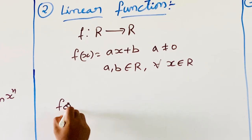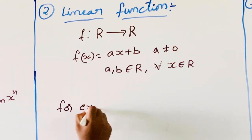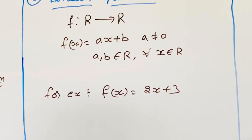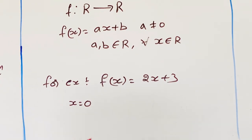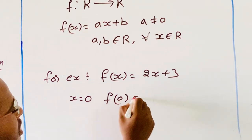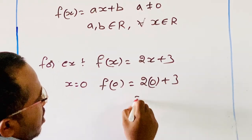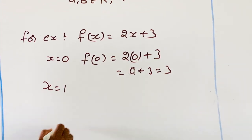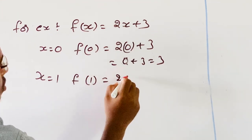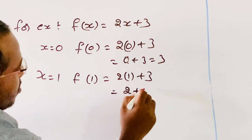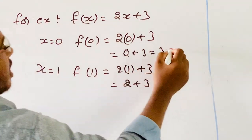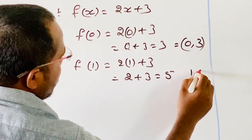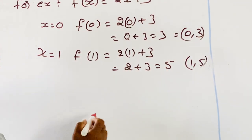For example, f of x is equal to 2x plus 3. When x is equal to 0, f of 0 is equal to 2 into 0 plus 3, that is equal to 3; so the point is (0, 3). When x is equal to 1, f of 1 is equal to 2 into 1 plus 3, that is 2 plus 3, equal to 5; so the point is (1, 5). Now we will represent these points on the graph.